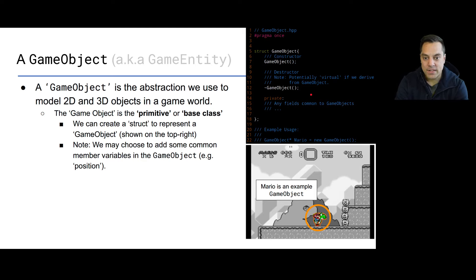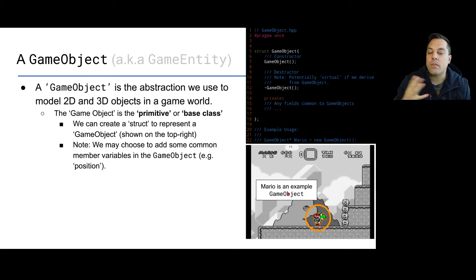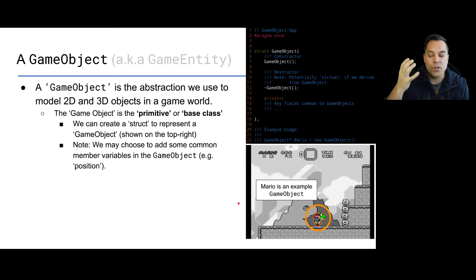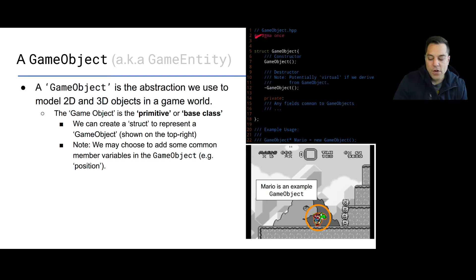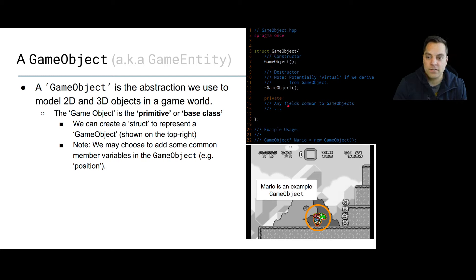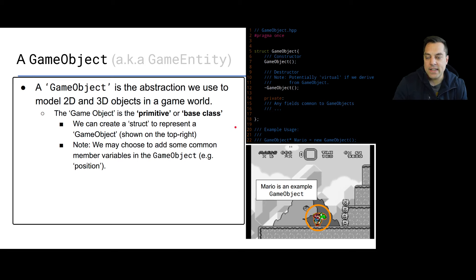What is a game object? We're doing this software design in the context of a game. Mario is an example of a game object - it's a base class, some primitive type from which you might derive other types, or as we'll find out with the component pattern, where you build up a unique game object from components. Here's an example in C++: you could have a struct or class with a constructor, destructor, and any other fields that are part of it.